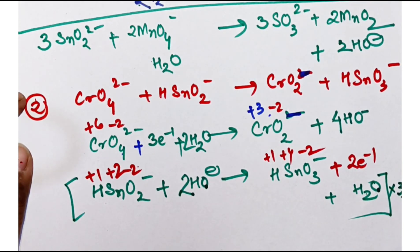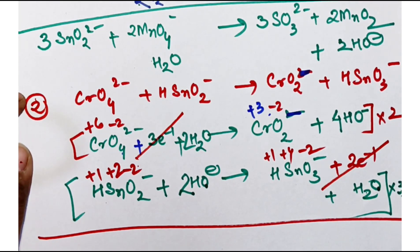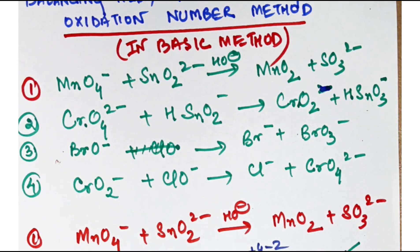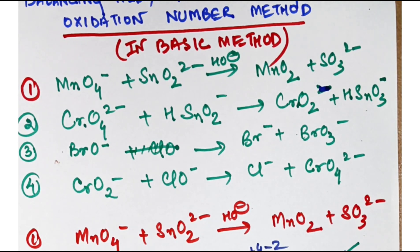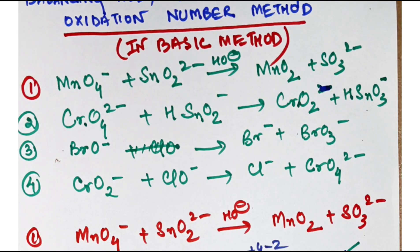Multiply the CrO₄²⁻ equation by two and the HSnO₂⁻ equation by three to balance the charge — electrons cancel. Write: 2CrO₄²⁻ plus 3HSnO₂⁻ gives 2CrO₂⁻ plus 3HSnO₃⁻. Now balancing water and hydroxyl: four water on one side and three water on the other gives one net water molecule, and eight minus six gives two OH⁻ on the right. So this is solved and balanced.